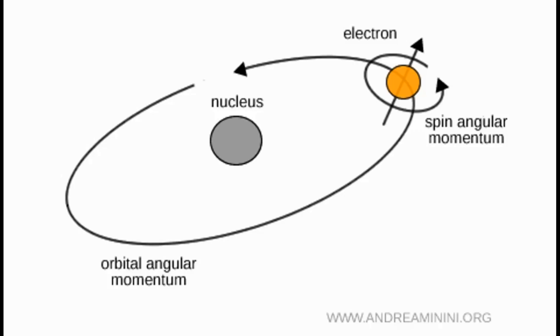That classical picture is probably the biggest barrier to understanding. While the name is suggestive, quantum spin is absolutely not a physical rotation.